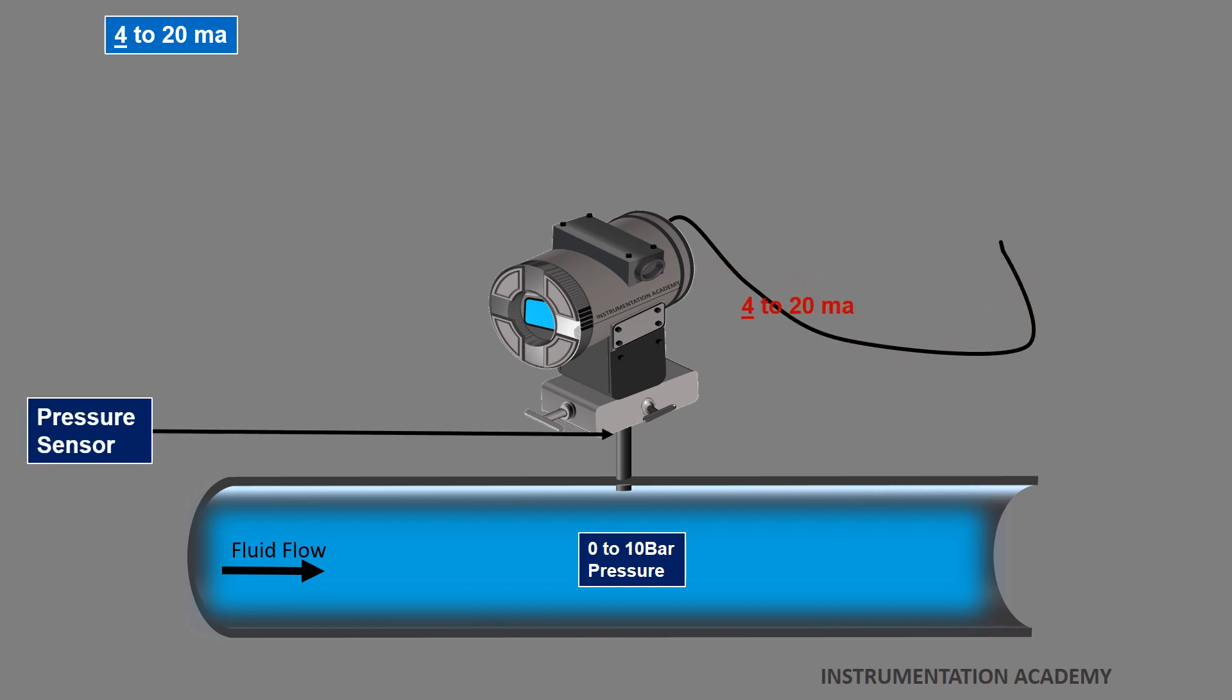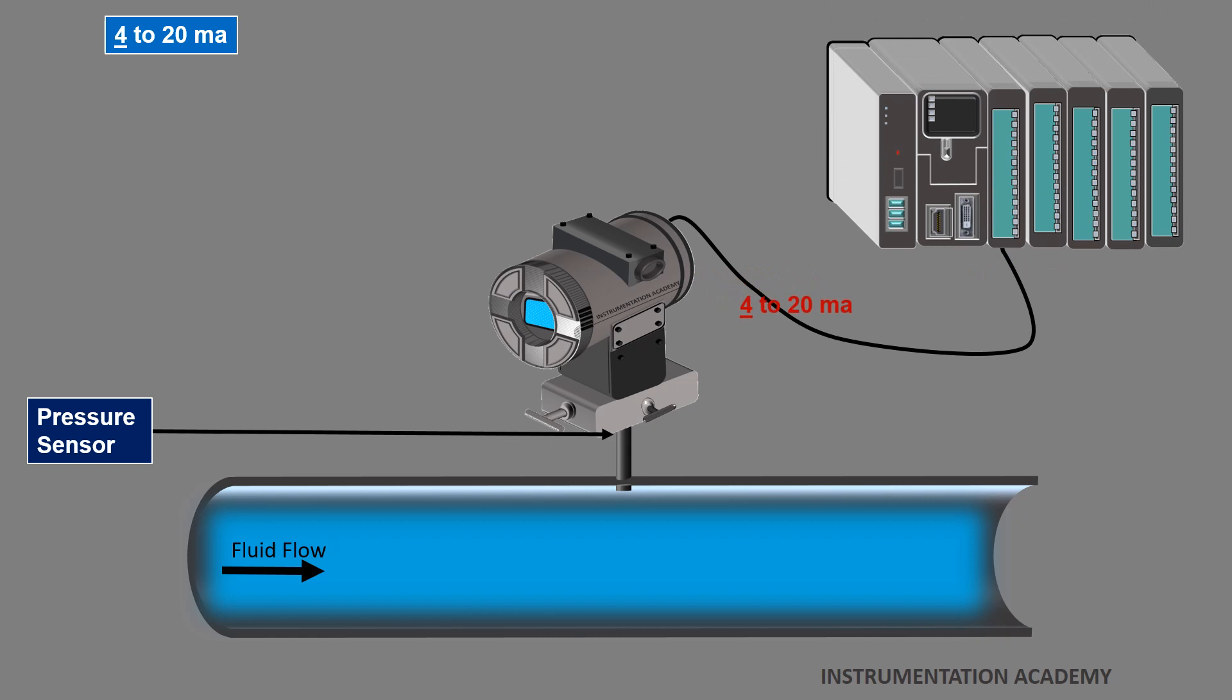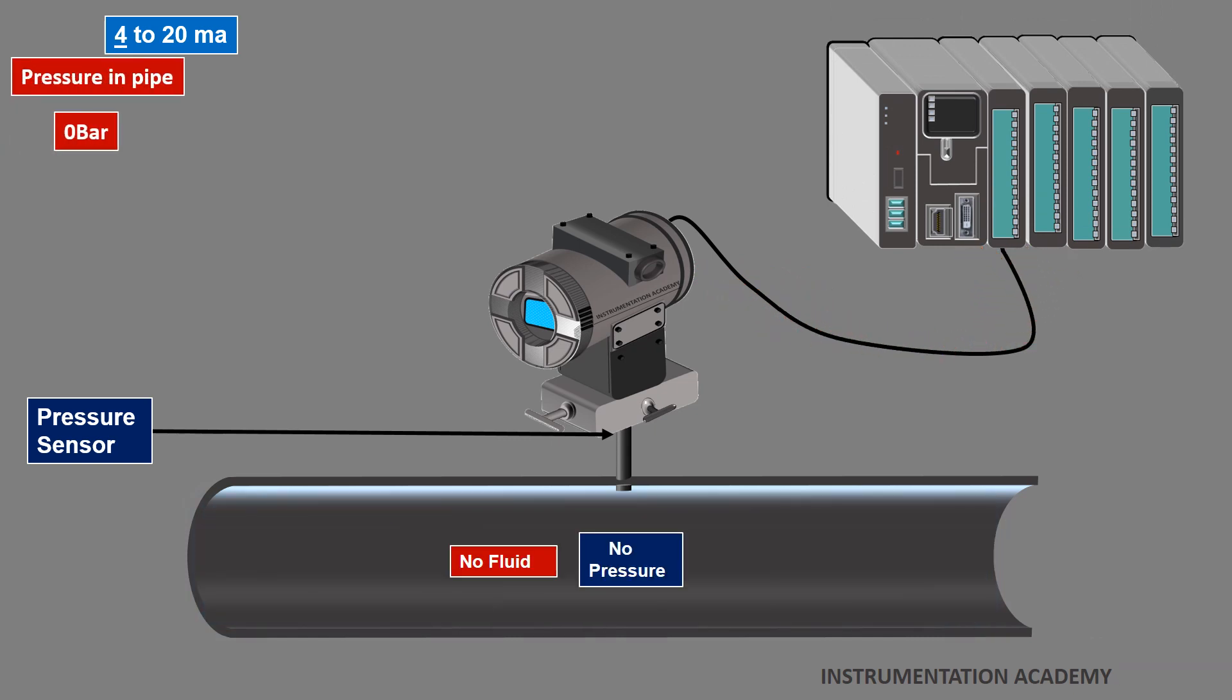This pressure transmitter is connected to input card of a PLC. When there is no fluid flowing through the pipeline, no pressure is exerted on the sensor. But the pressure transmitter still generates 4 mA current signal at the output terminal.